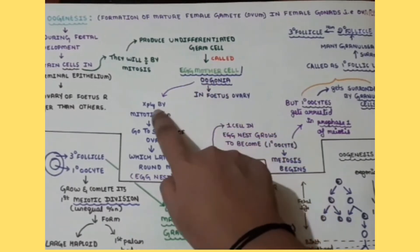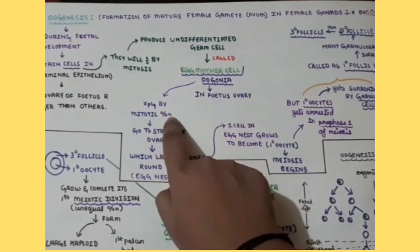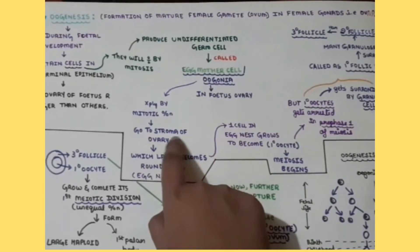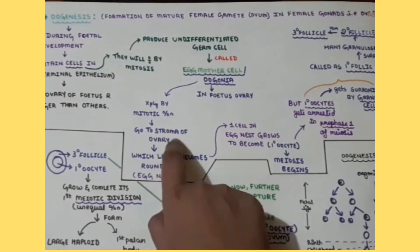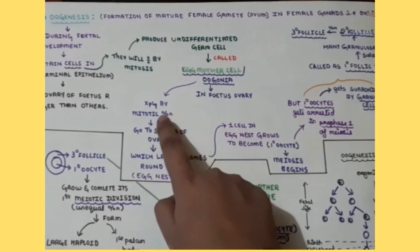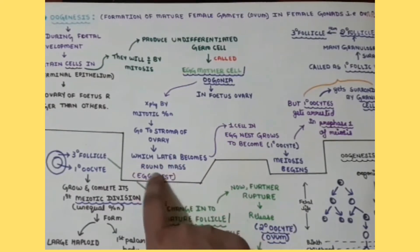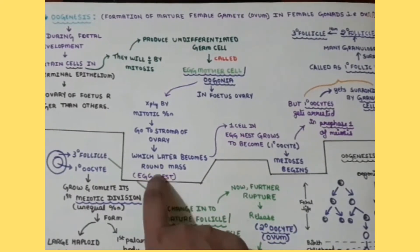So this oogonia will multiply by the mitotic division and go into the stroma of the ovary, so in that region it will go and which will later become the round mass called as the egg nest.